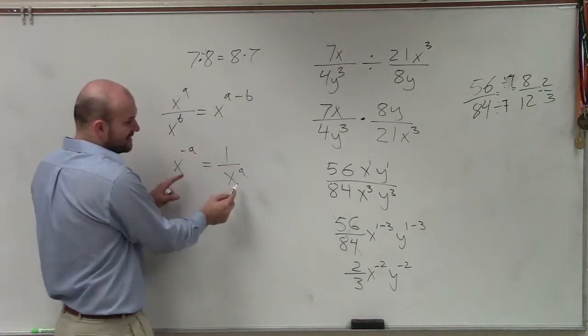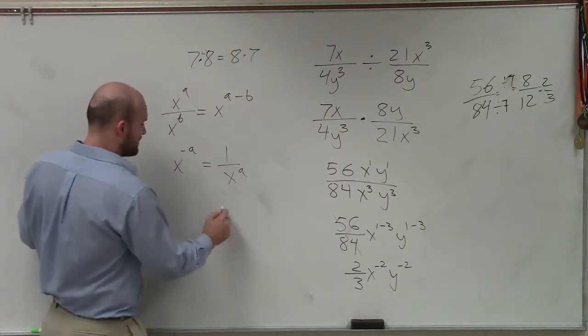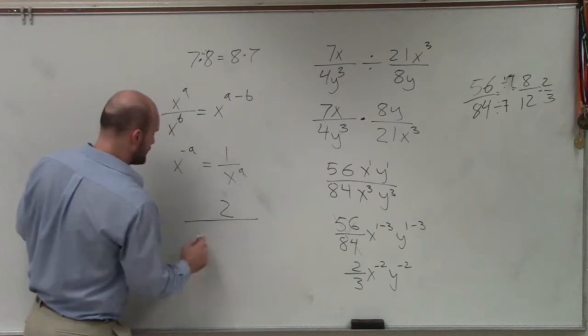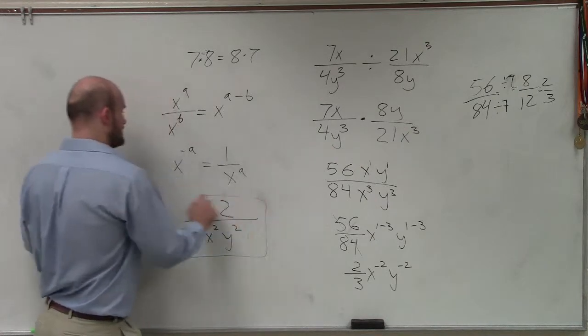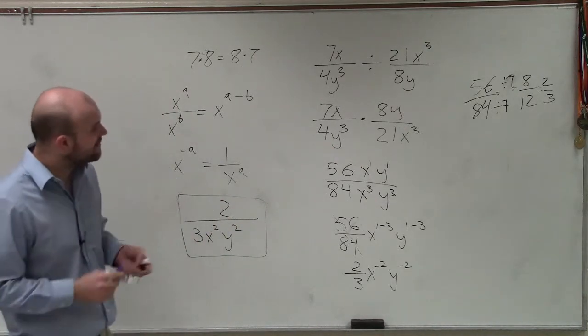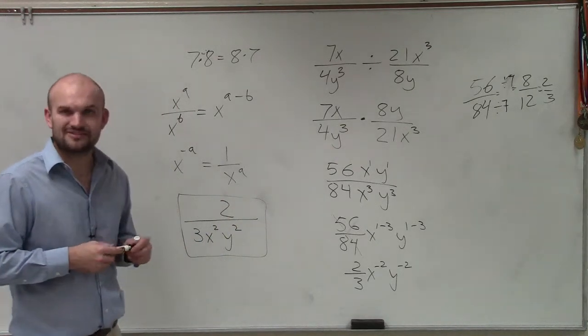But since they're negative, I can now rewrite them in the denominator. So my final answer is going to be 2 over 3x squared y squared. So there you go, ladies and gentlemen. That is how you divide your rational expressions. Thanks.